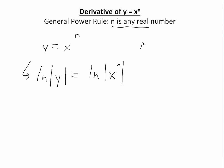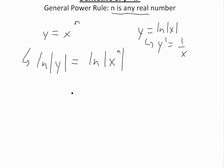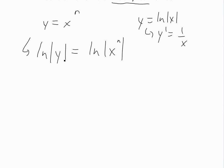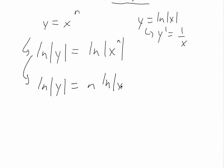As I showed in another video, if y equals ln of the absolute value of x, then y prime equals 1 over x. So regardless, we can use the absolute value and then take the derivative inside. Using log rules, the exponent n comes down, simplifying the whole thing to: ln y equals n times ln of the absolute value of x.